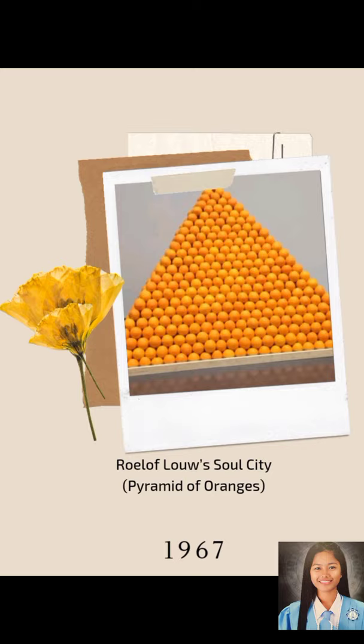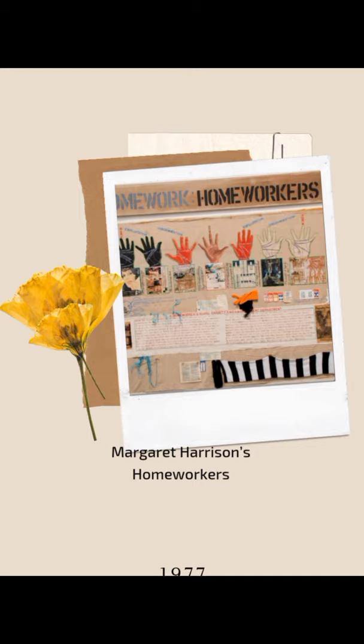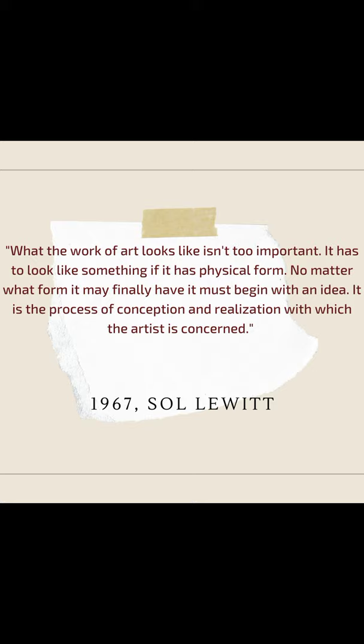What he had done was pass control from artist to viewer, a radical step. Another example is Bruce McLean's Post, Work for Blintz III in 1971. The last example of conceptual art is Margaret Harrison's Homeworkers in 1977. What the work of art looks like isn't too important — it has to look like something if it has physical form. No matter what form it may finally have, it must begin with an idea. It is the process of conception and realization with which the artist is concerned.